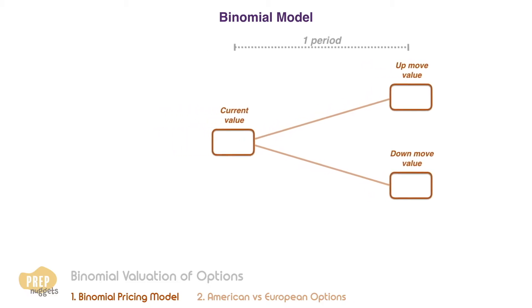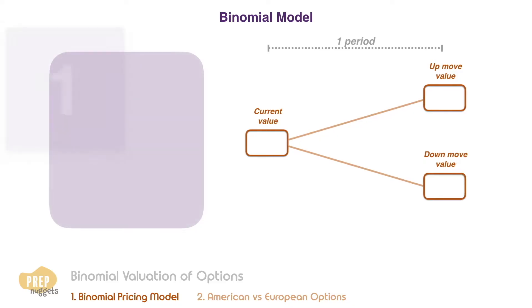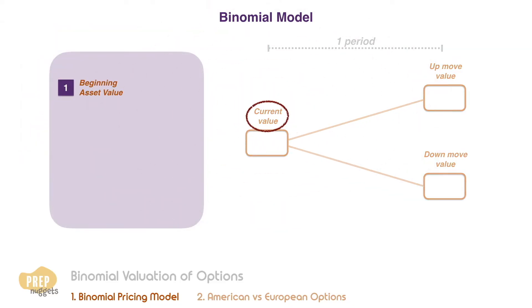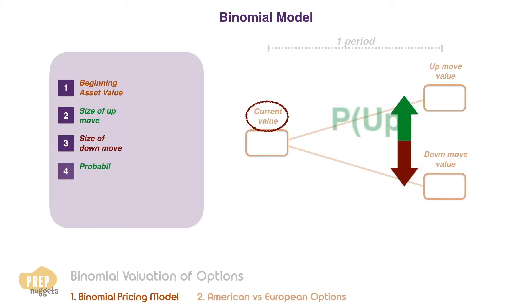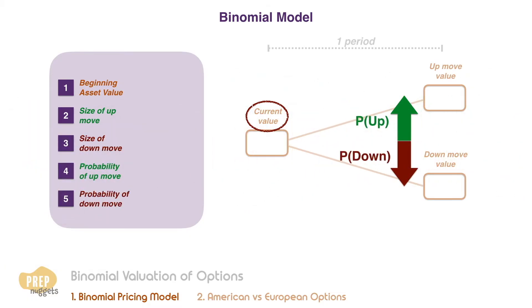To construct a binomial model we need to know the beginning asset value, the size of the up move and down move, and the probabilities of the up move and down move occurring.